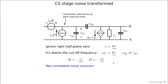We now have two correlated noise sources, B·id and D·id, and we cannot simply add them because their contribution depends on the source impedance. We will study this optimization for different source impedances. Before doing so, I want to introduce the SLiCAP model for noise, since we will use SLiCAP for noise design.